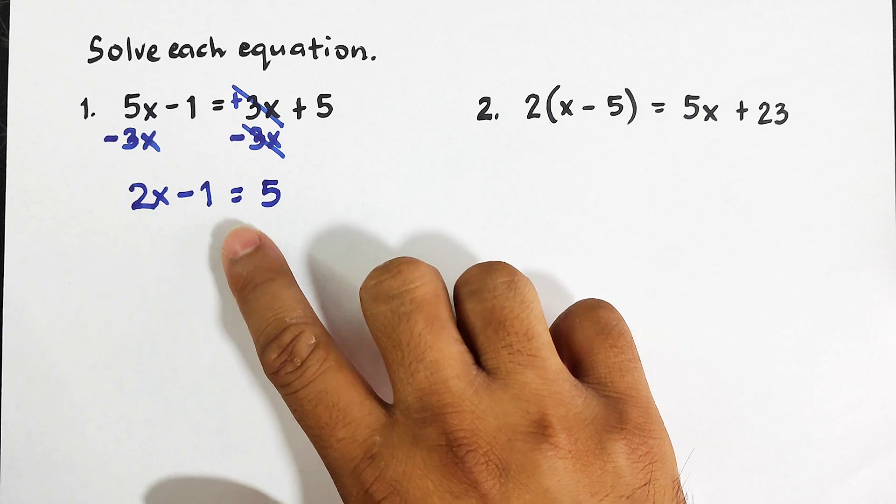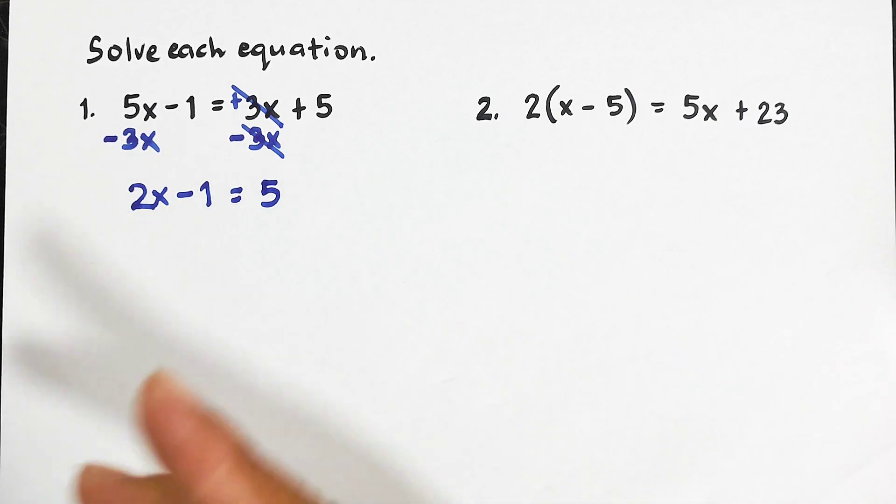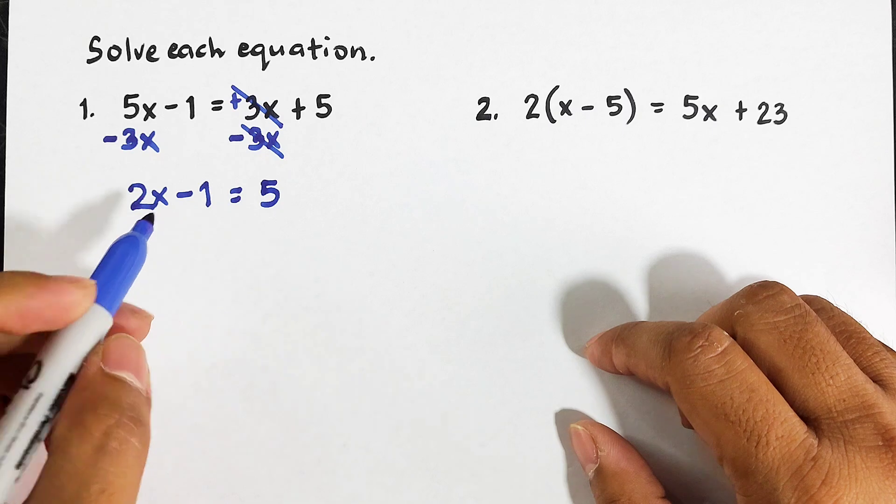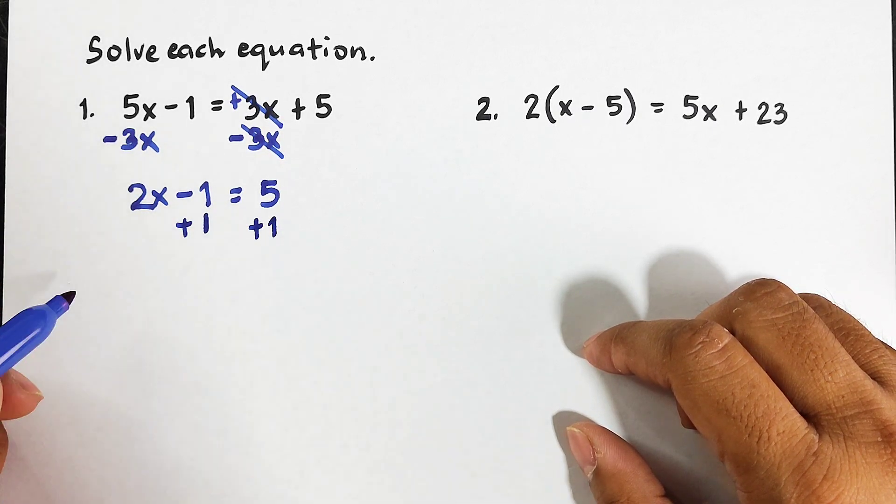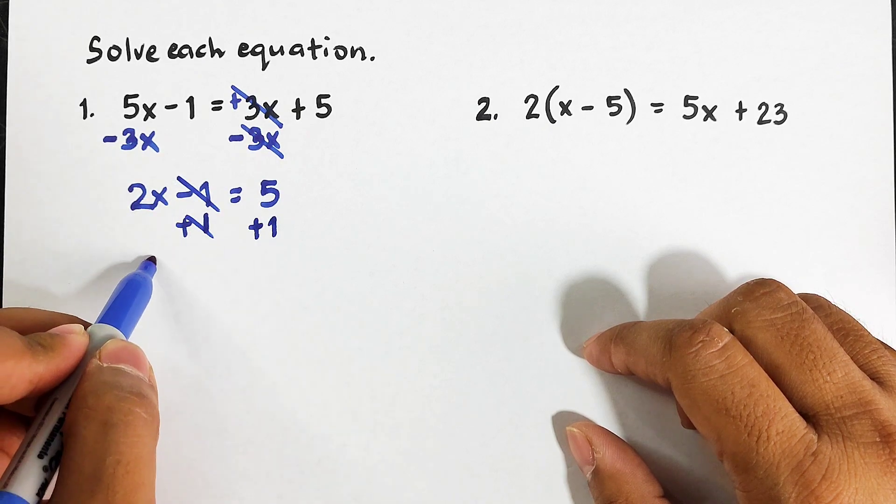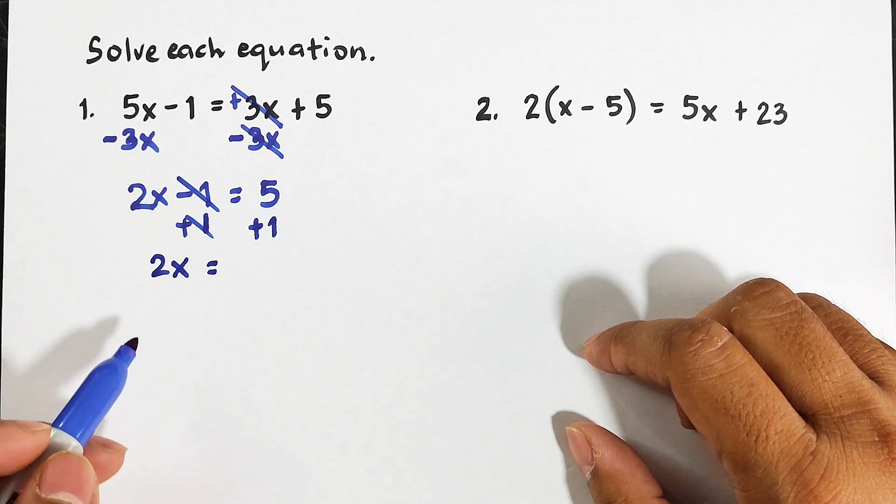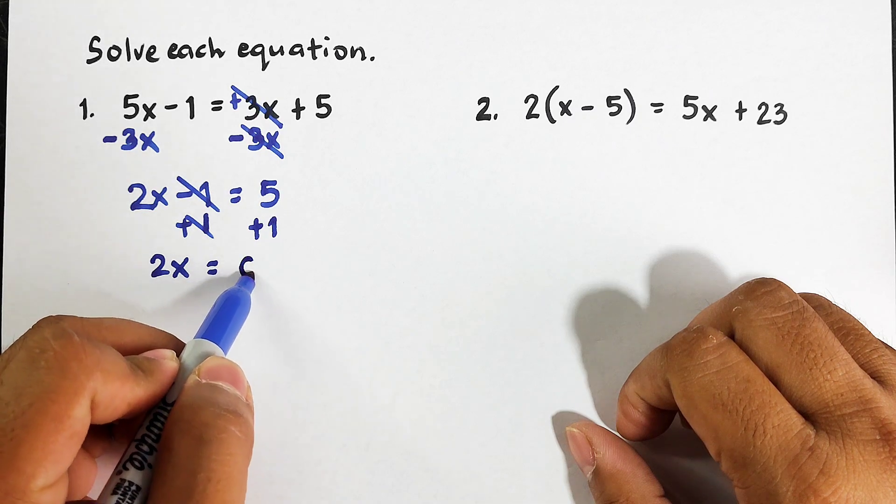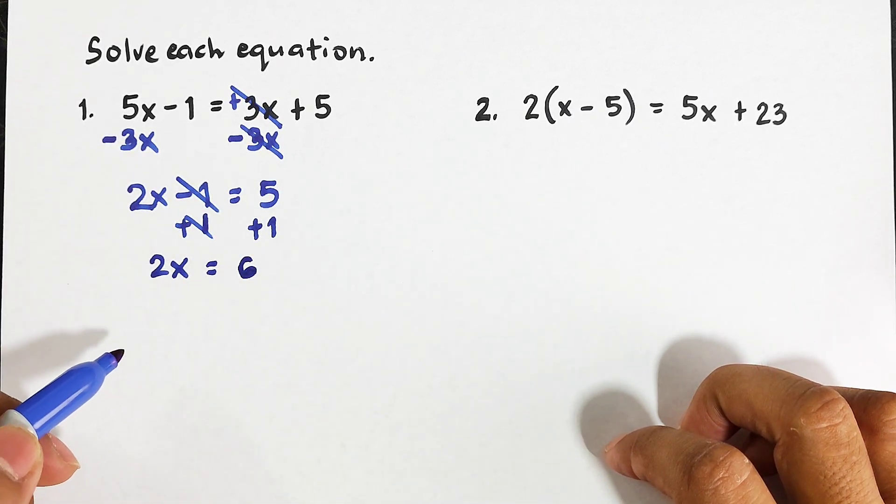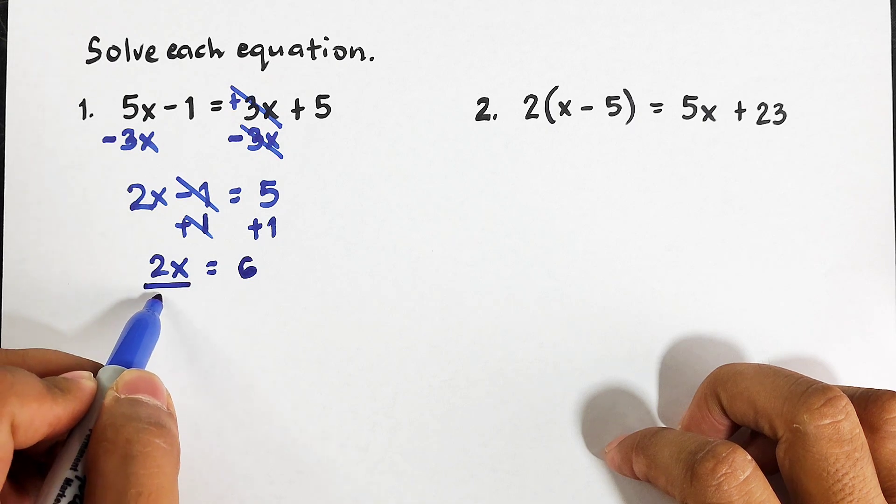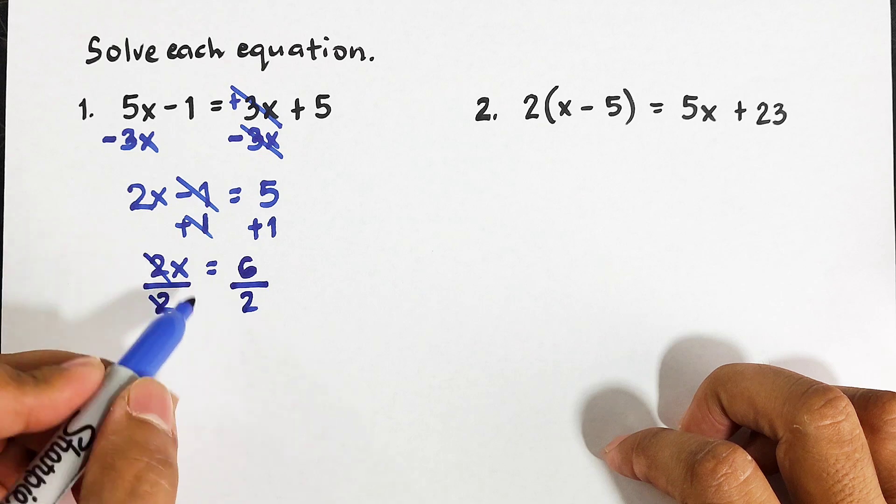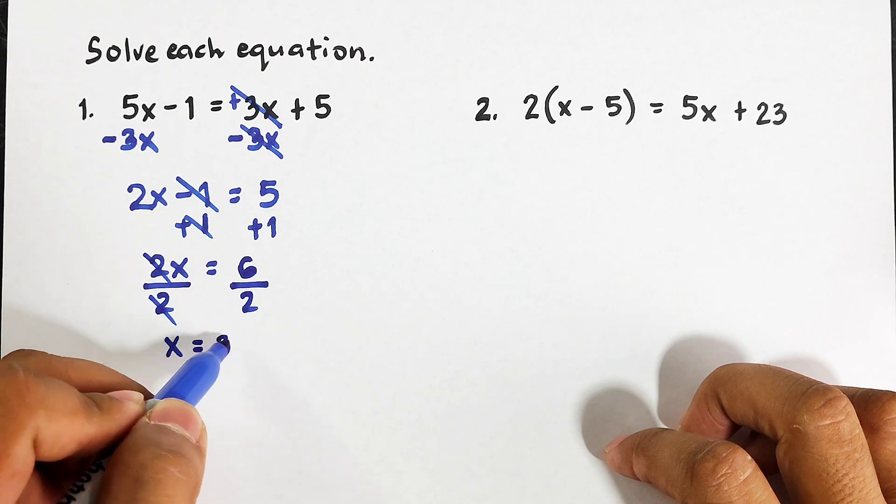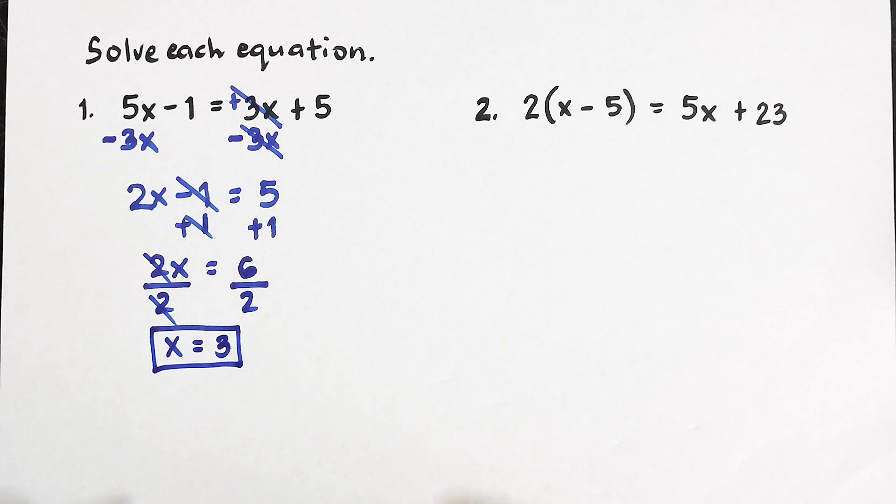And as you can see, this is the normal equation we can solve by two steps. This is minus 1, we need to add plus 1 here and also plus 1 here, so this is zero. We have 2x = 5 + 1, which is equal to 6. Now to finally solve for the value of x, divide both sides by 2. Cancel, cancel. Your x is equal to 3.